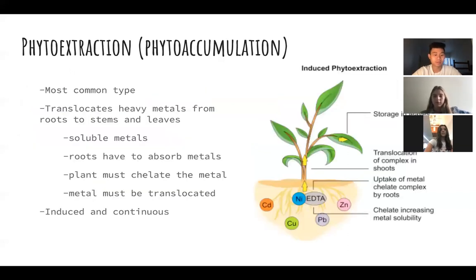Phytoextraction, also known as phytoaccumulation, is the most common type of phytoremediation technique. It decontaminates the soil of heavy metals such as copper, lead, and zinc. It is the process by which plants translocate heavy metals in the soil through absorption by the roots and storage in the leaves and stems.